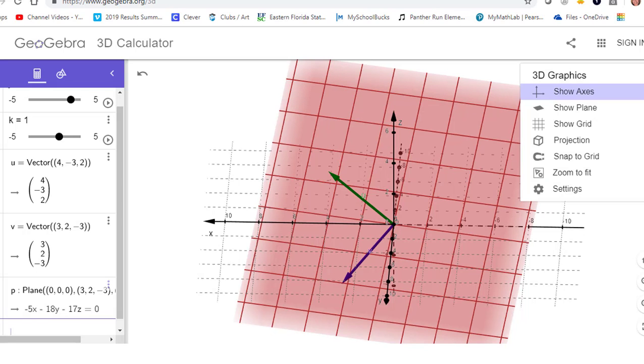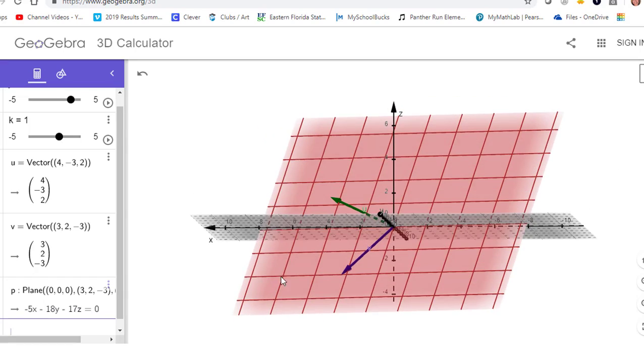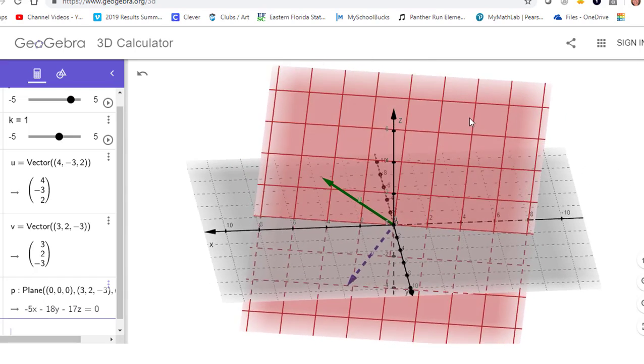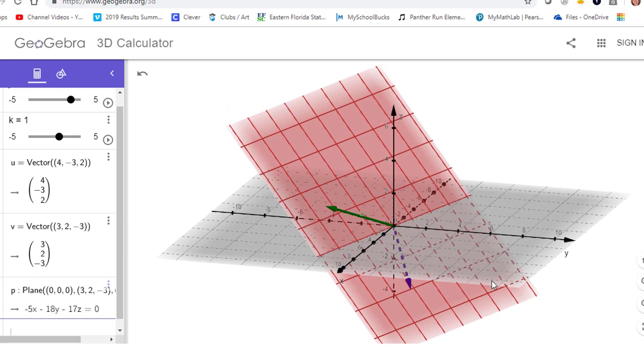And, in fact, taking the dot product and determining whether or not the dot product turns out to be 0 is actually the test to see if two vectors are orthogonal.